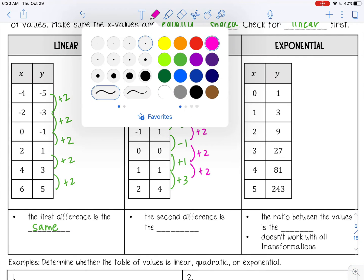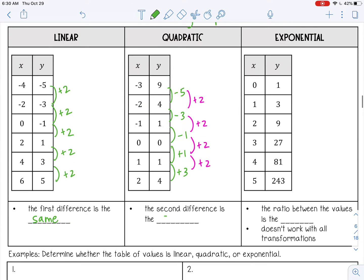So in that case, this is quadratic. The second difference is the same. And the second difference just means this column.